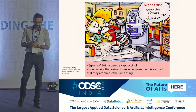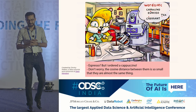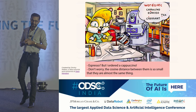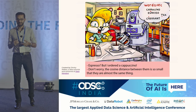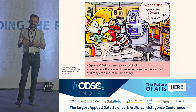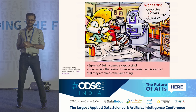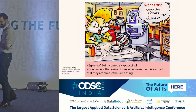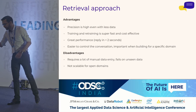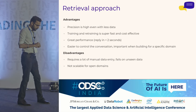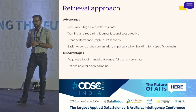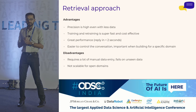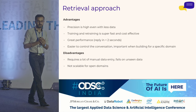There's a nice cartoon by Dmitri Malkov that I really love. A person is saying 'Hey, espresso, but I ordered cappuccino,' and the bot replies 'Don't worry, the cosine distance of them is so small that they're almost the same thing.' So that's kind of how you get the retrieval approach built out.